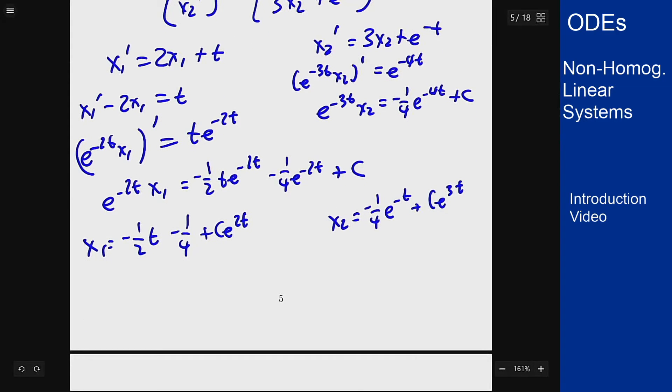Then combine these into a solution to the non-homogeneous problem in a form that will make more sense. We can write this as our vector x is going to be x₁ which I'll put the first part here: -½t - ¼.